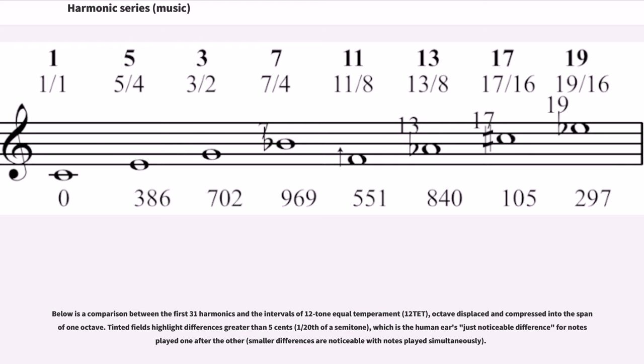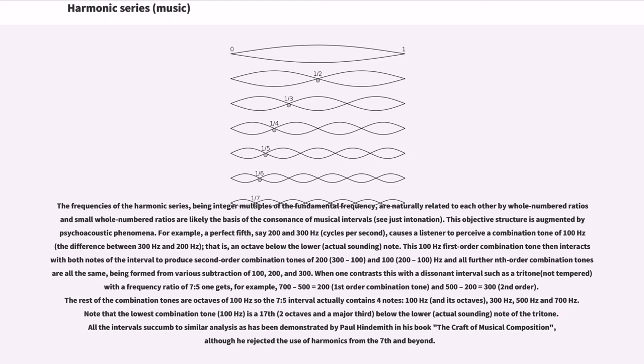The frequencies of the harmonic series, being integer multiples of the fundamental frequency, are naturally related to each other by whole-numbered ratios, and small whole-numbered ratios are likely the basis of the consonance of musical intervals. This objective structure is augmented by psychoacoustic phenomena. For example, a perfect fifth, say 200 and 300 hertz, causes a listener to perceive a combination tone of 100 hertz, the difference between 300 hertz and 200 hertz, that is an octave below the lower actual sounding note. This 100 hertz first-order combination tone interacts with both notes of the interval to produce second-order combination tones of 200, 300, and all further combination tones are all the same.